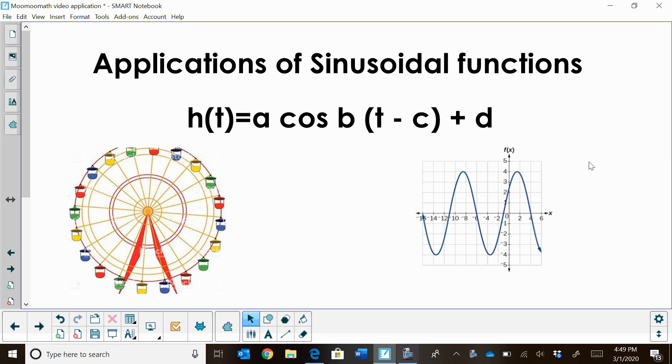Hi, welcome to MooMoo Math. Today we're going to look at applications of sinusoidal functions. A sinusoidal function is a sine function, or in this case a cosine function, that oscillates representing the height of an object. We're going to be looking at a Ferris wheel problem.